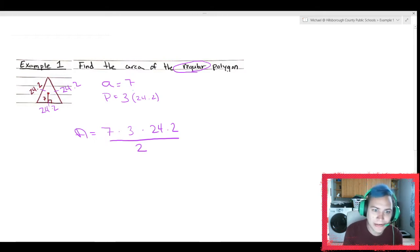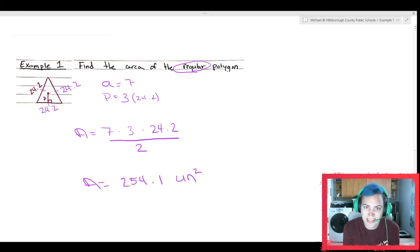So ultimately, what ends up happening is our area formula is going to be one-half times 7 times 3 times 24.2. However you want to do it, just make sure you get that half in there. If I put all that into my calculator, I would get 254.1 units squared, meaning that 254 squares fit inside that triangle. That was it. That was pretty easy.